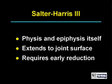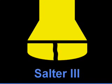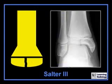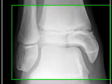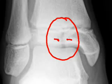Salter-Harris 3 fractures are fractures through the epiphyseal plate and the epiphysis itself. Because they involve the epiphysis, they extend to the joint surface, and because they extend to the joint surface, they can involve the articular cartilage and result in damage to the articular cartilage. They require early reduction. Here is an example of a Salter-Harris 3 fracture of the distal tibia. You can see a linear radiolucency that extends through the epiphysis to the articular surface, which is going to result in damage to the articular cartilage.